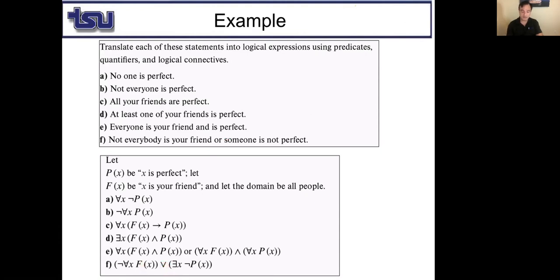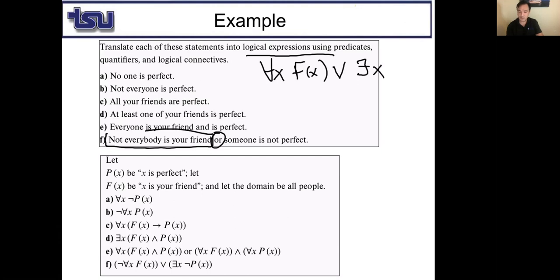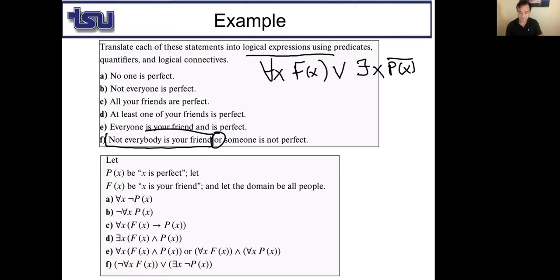'Not everybody is your friend or someone is not perfect': this is ¬(∀x F(x)) ∨ ∃x ¬P(x), equivalent to ∃x ¬F(x) ∨ ∃x ¬P(x). The negation of 'everyone is your friend' gives at least one person who is not your friend, and there exists a person who is not perfect.